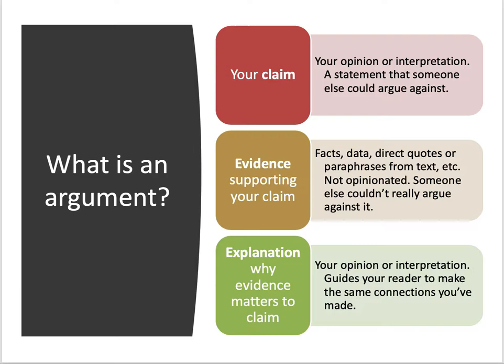A claim is your opinion or idea — it's a statement someone else could argue against. For example: "The artist James Gilray is condemning gluttony in his painting" — that's a claim. The evidence could be factual information like data or statistics, a summary of a text, or direct quotations. It's not opinionated; someone else couldn't really argue against it. For instance: "He's too fat for his clothing," "He has a pompous expression on his face," "The room is untidy." And because someone else can't read your mind, a good argument always includes an explanation of why the evidence matters to the claim, which is again your opinion or interpretation.